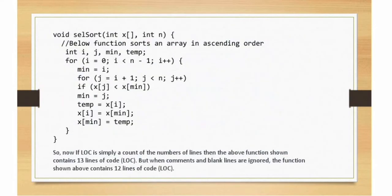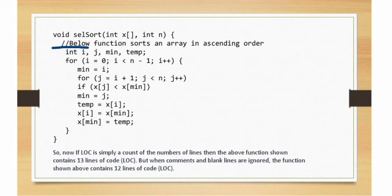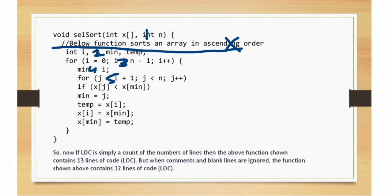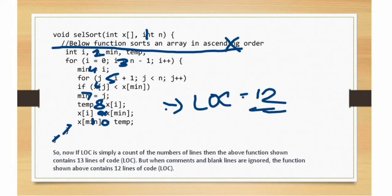Let's look at an example of how we count lines of code. We start counting: comments are not counted, blank lines are not counted. We count declarations and everything else. So counting through the example: 1, 2, 3, 4, 5, 6, 7, 8, 9, 10, 11, 12. Our total LOC is 12.